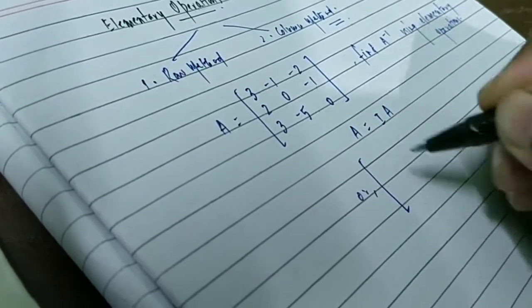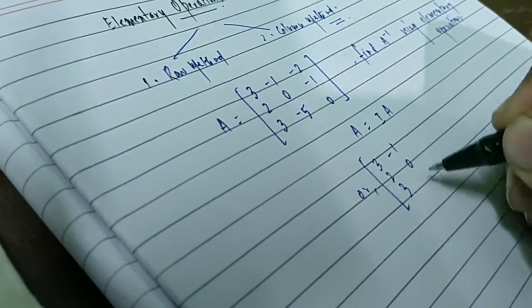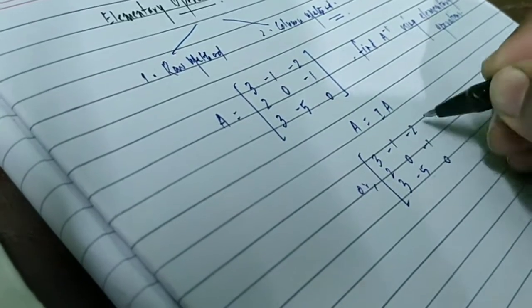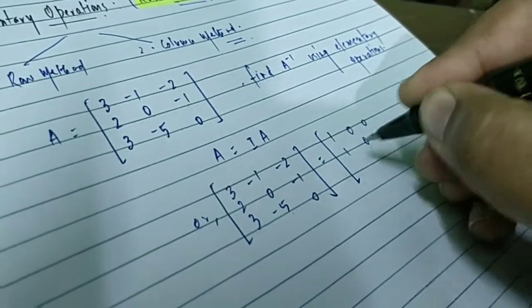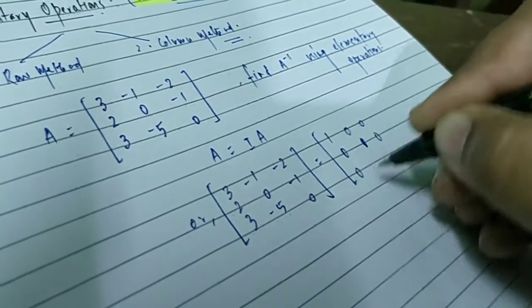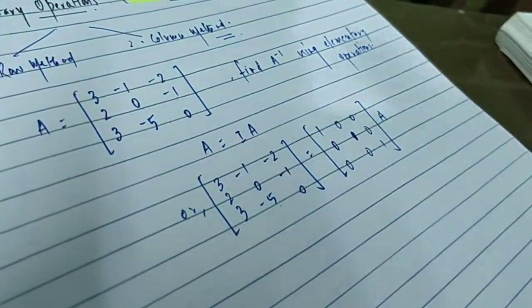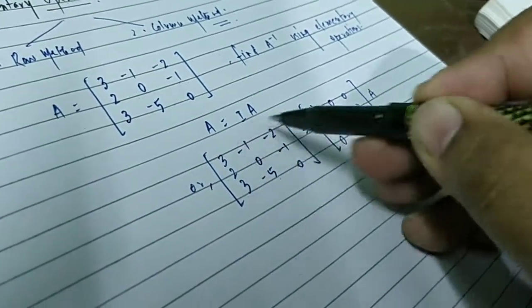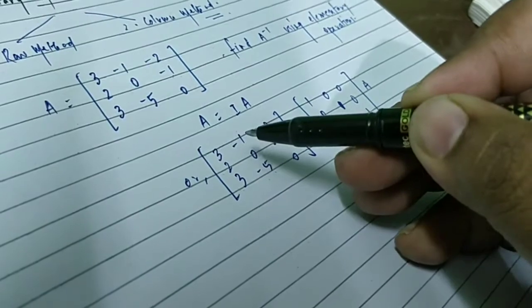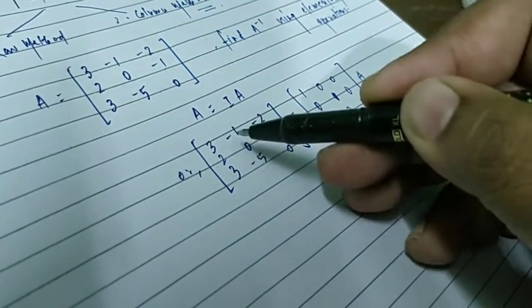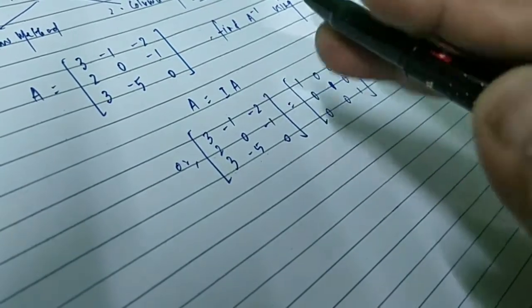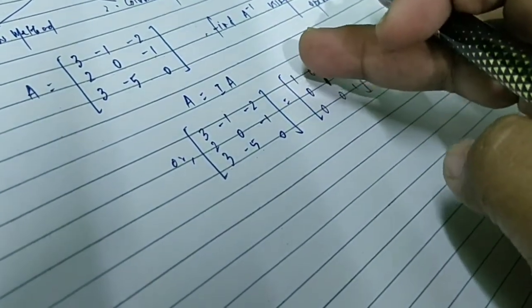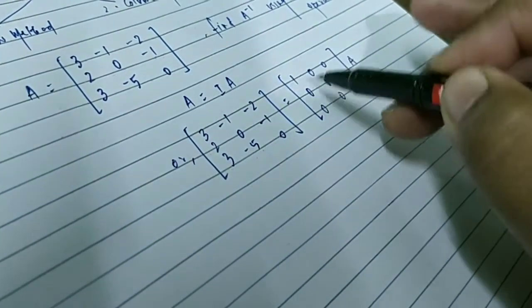We will substitute the left-hand side A with the actual matrix: 3, 2, 3, minus 1, 0, minus 5, and minus 2, minus 1, 0. On the right-hand side, we substitute the identity matrix with the 3×3 identity matrix — 1, 0, 0 / 0, 1, 0 / 0, 0, 1 — and let this A remain as such. We will perform operations on the left-hand side matrix to make it an identity matrix.